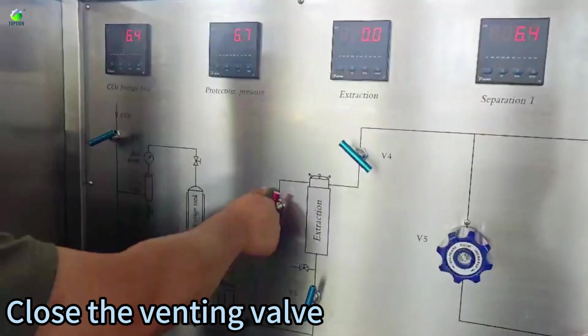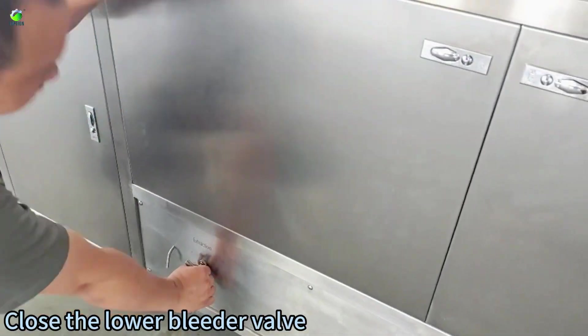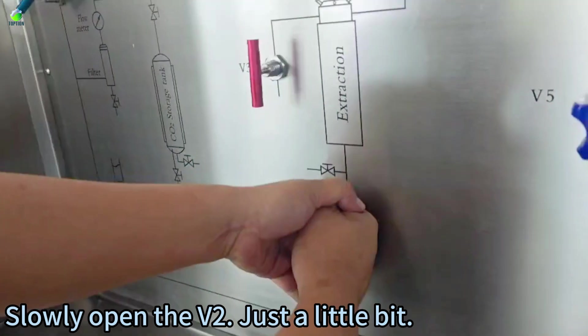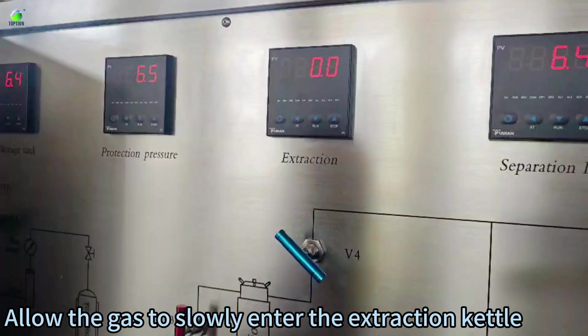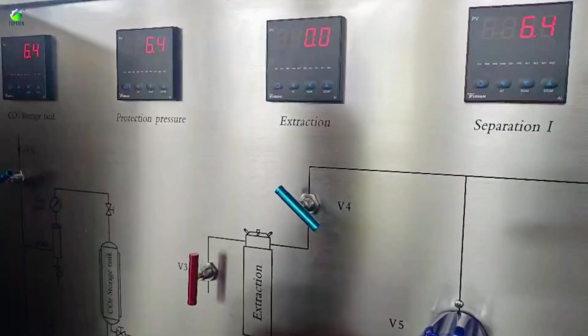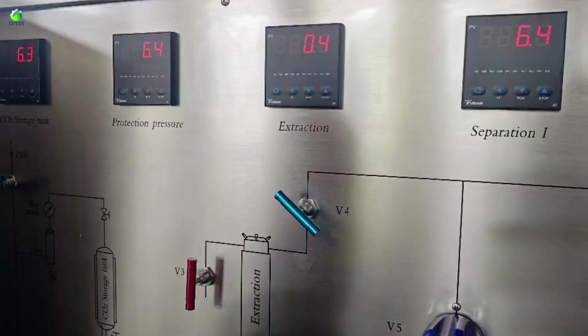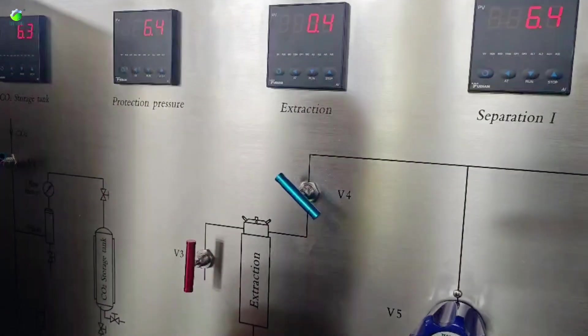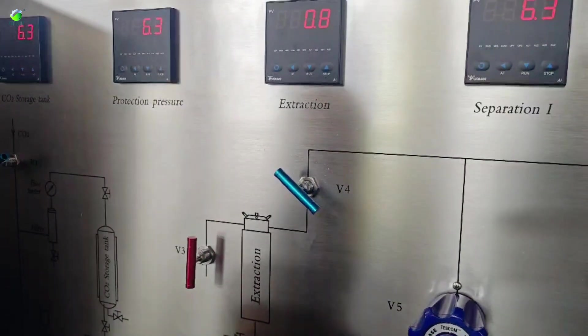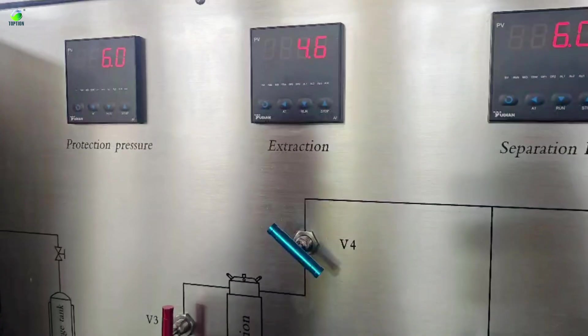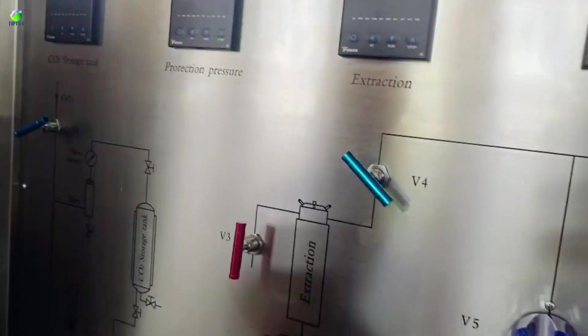Close the venting valve. There's gas inside the device. Close the lower bleeder valve. Slowly open the VR, just a little bit. Allow the gas to slowly enter the extraction kettle. You can add a little more if appropriate.